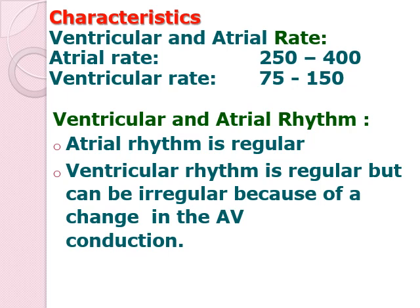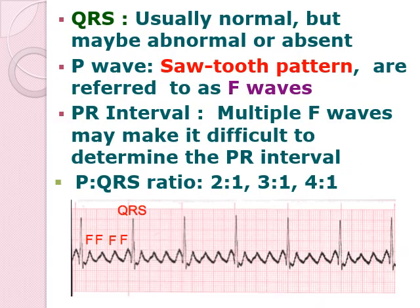The atrial rate is 250 to 400. The ventricular rate is only 75 to 150 because your patient would have the AV block, which is considered to be a therapeutic AV block. The rhythm is still considered to be regular because it follows a specific pattern. The ventricular rhythm is also regular; however, it can be irregular if there will be changes in your AV conduction. That is why oftentimes this is referred to as having a sawtooth appearance.